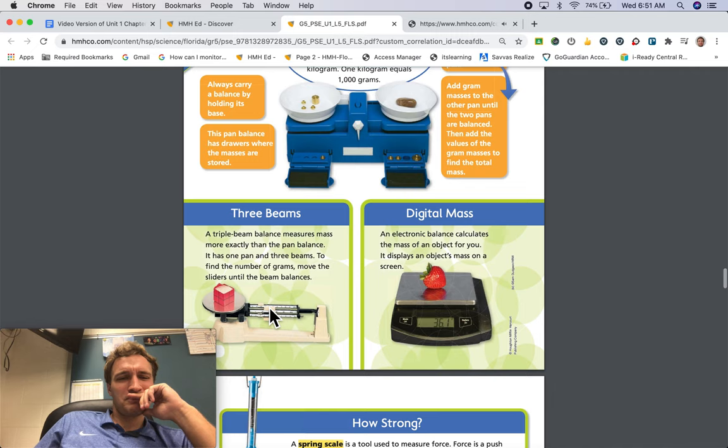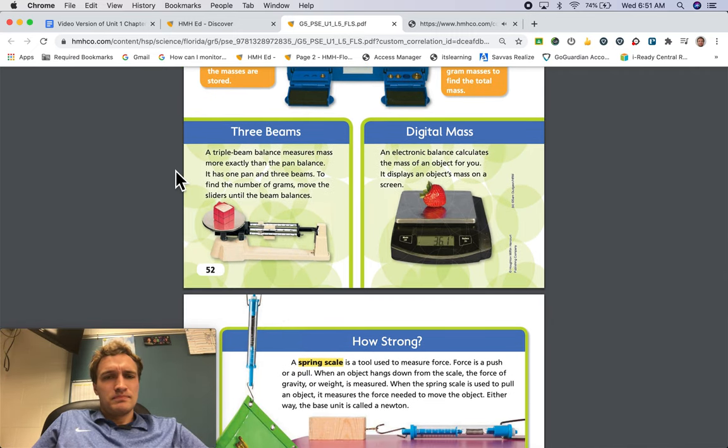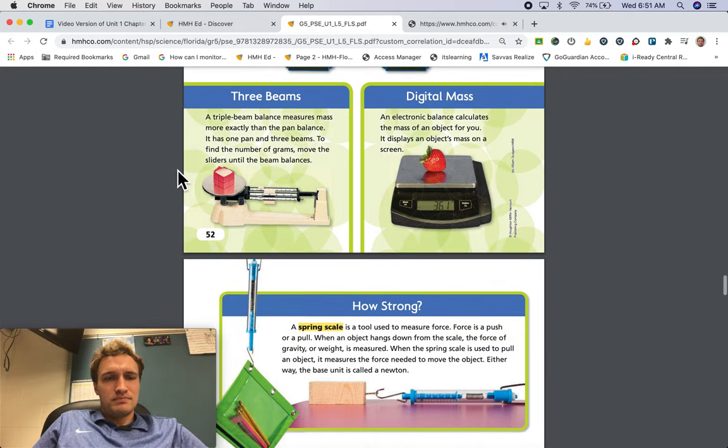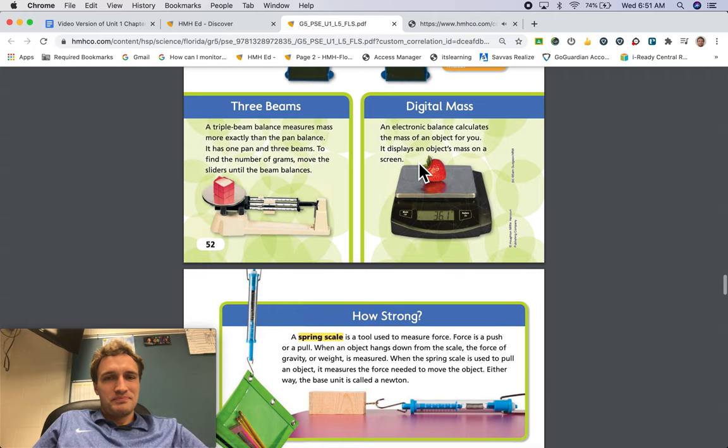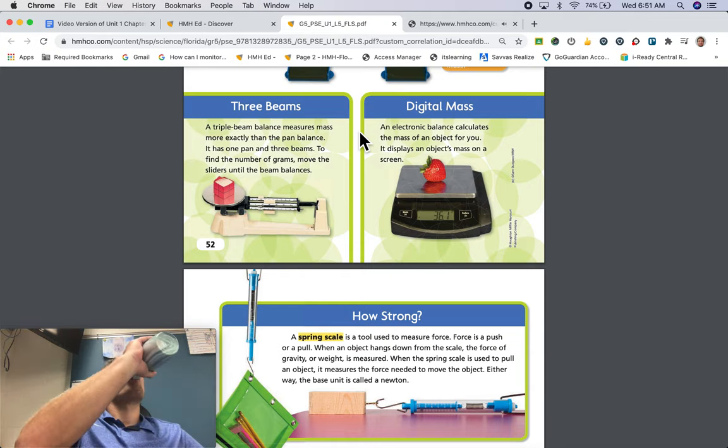Three beams. A triple beam balance measures mass more exactly than the pan balance. It has one pan and three beams. To find the number of grams, move the sliders until the beam balances. Digital mass. An electronic balance calculates the mass of an object for you. It displays an object's mass on a screen.